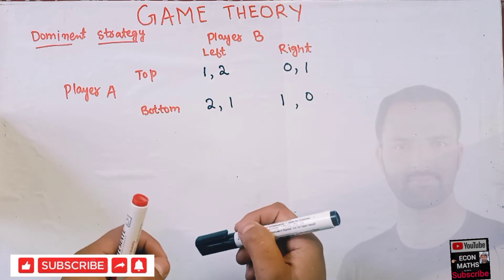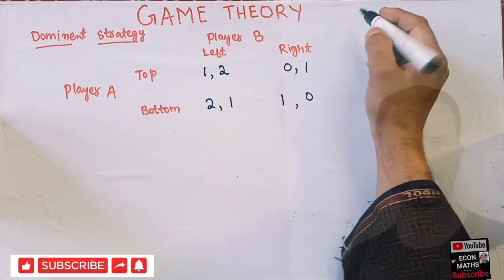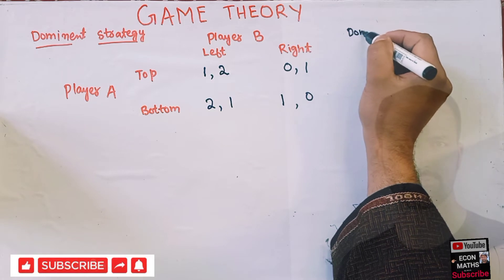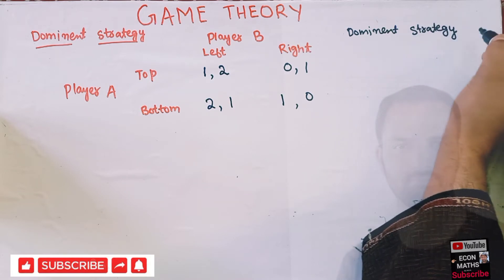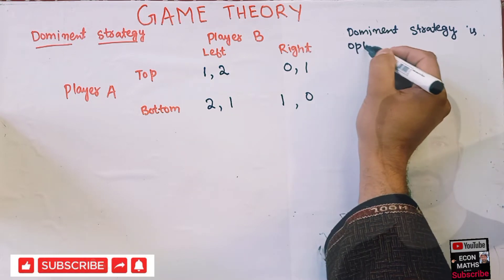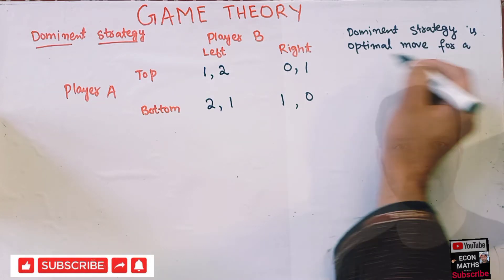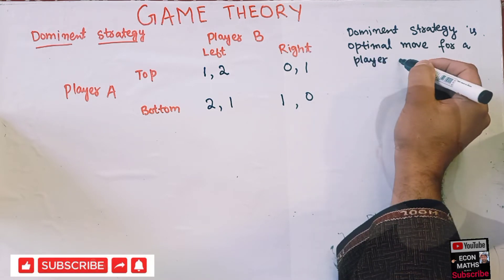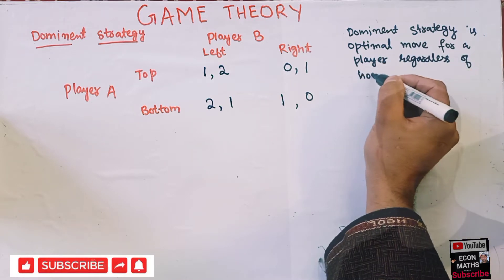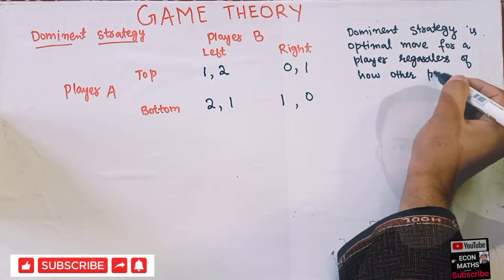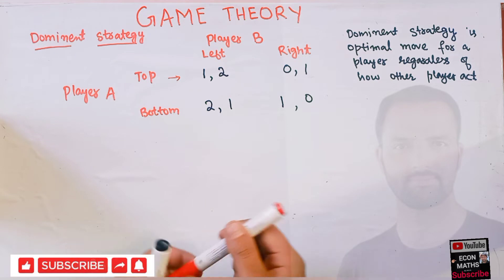Now, what is meant by dominant strategy in this case? Dominant strategy is the optimal move for a player regardless of how the other player acts. Let us see what the dominant strategy is in this payoff matrix.